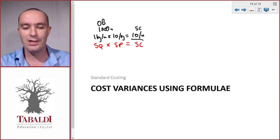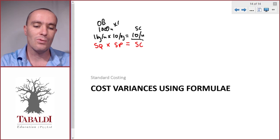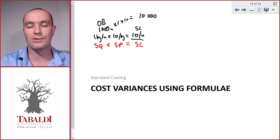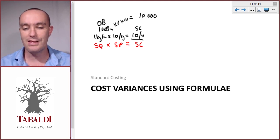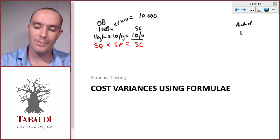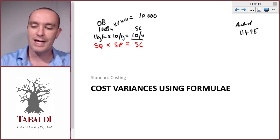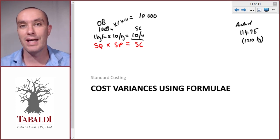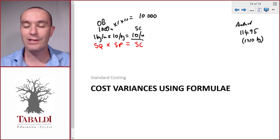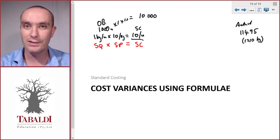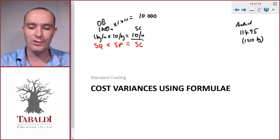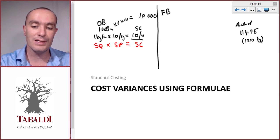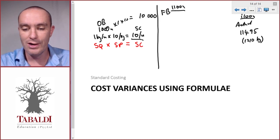From our original budget: 1,000 units × 1 × $10 = $10,000 budgeted material cost. The actual cost was $11,495. They would have given us either the actual price or the actual kilograms to let us calculate the other. We needed to calculate the material price variance and the material quantity (usage) variance. First, we flexed the budget for 1,100 units — the actual units produced.